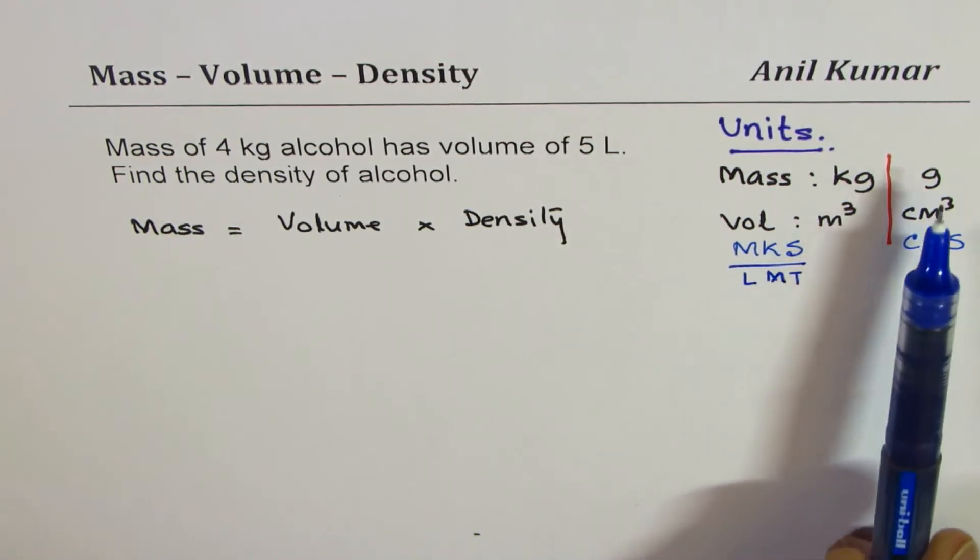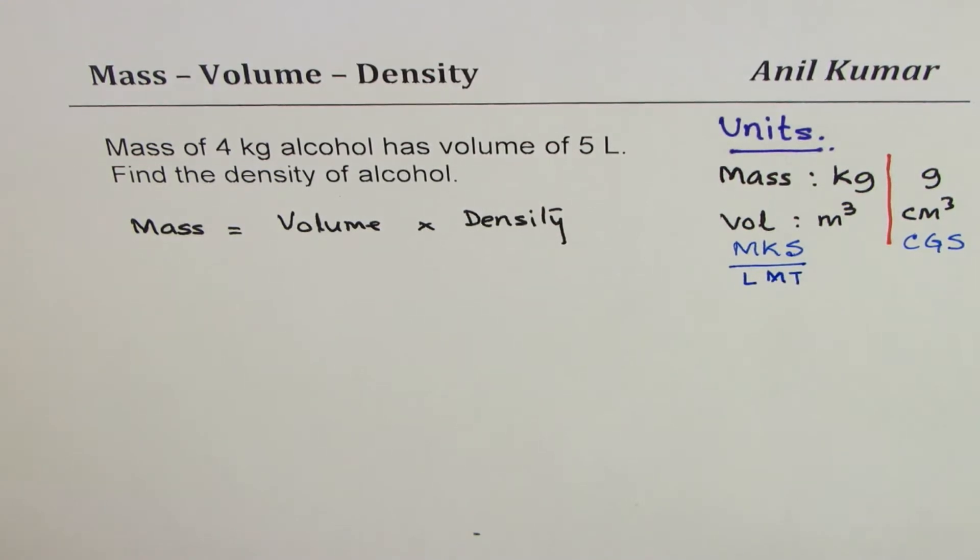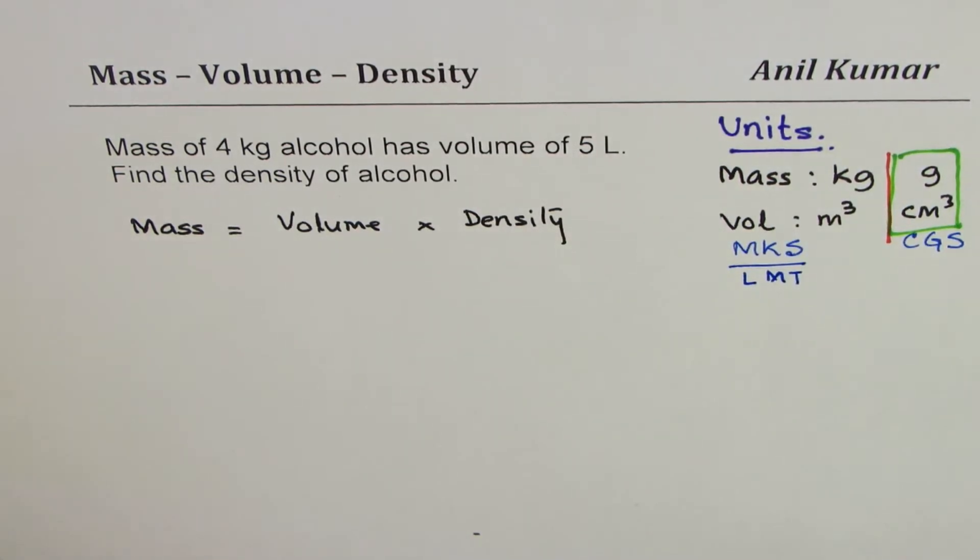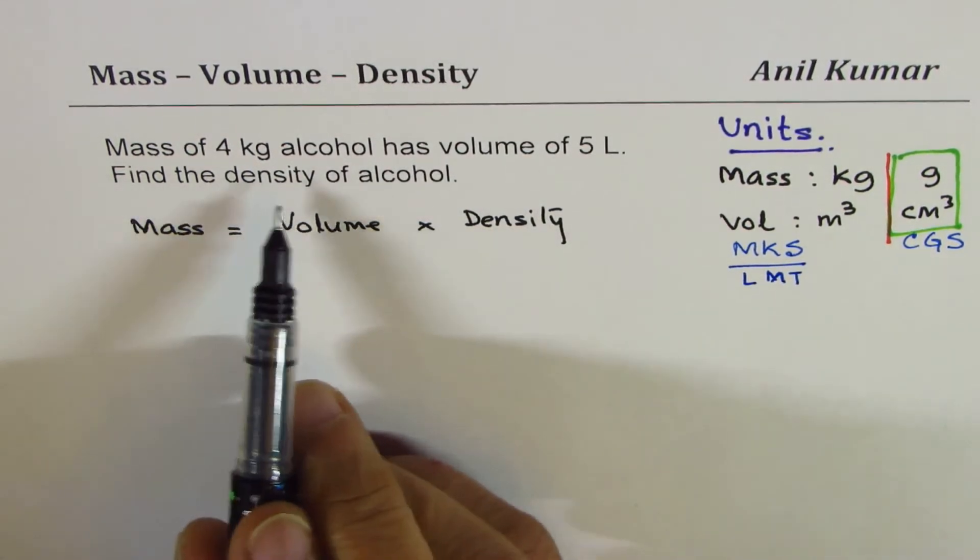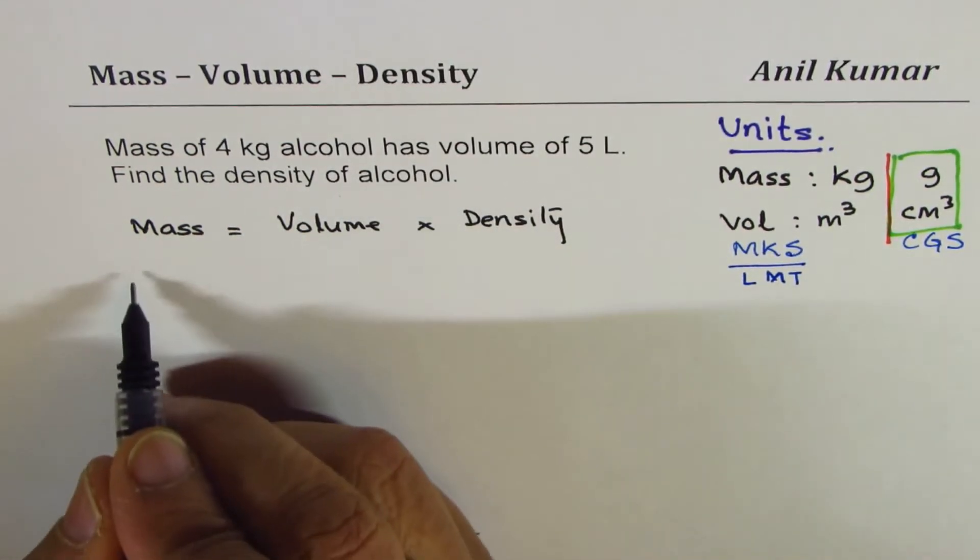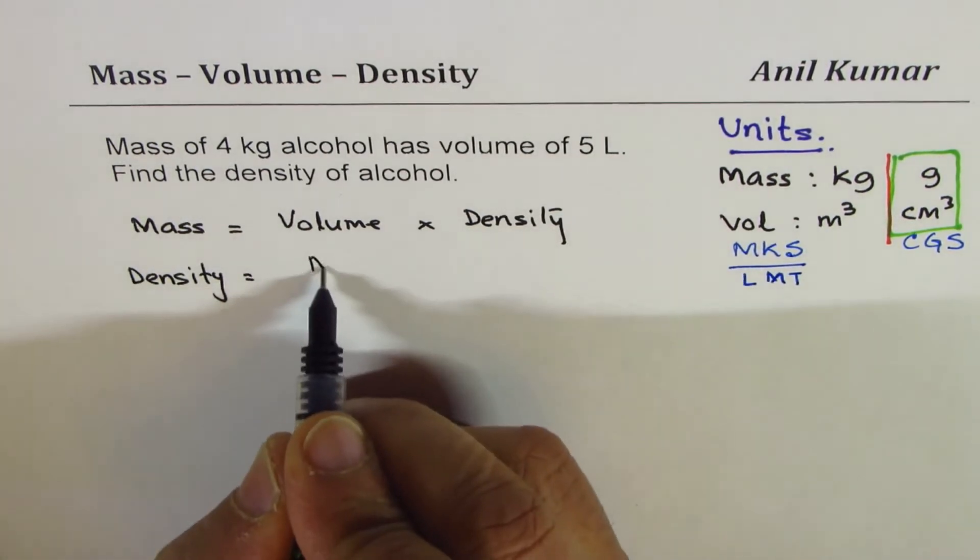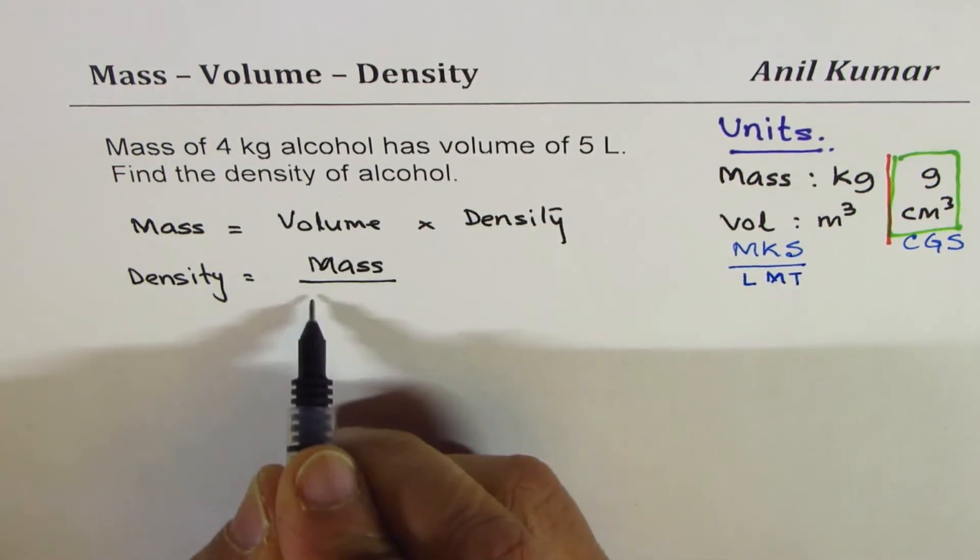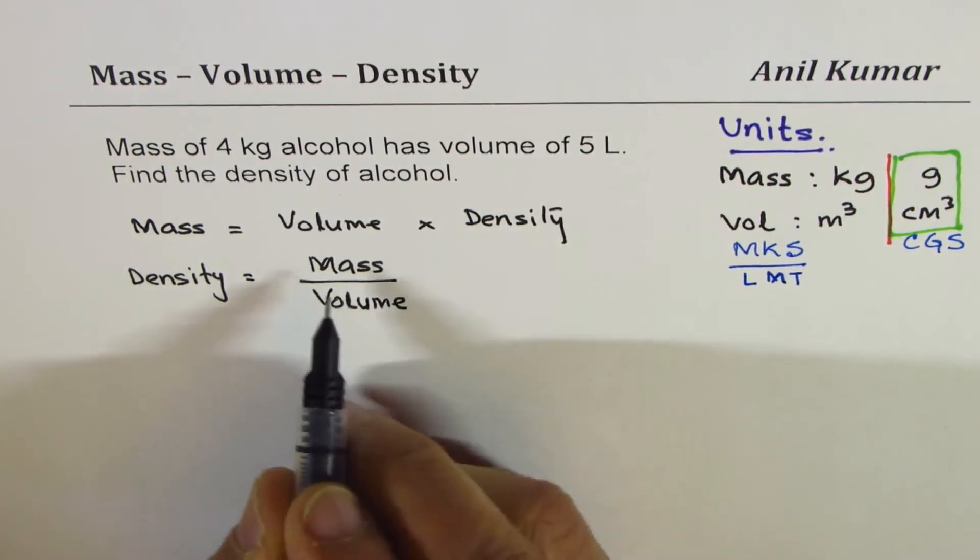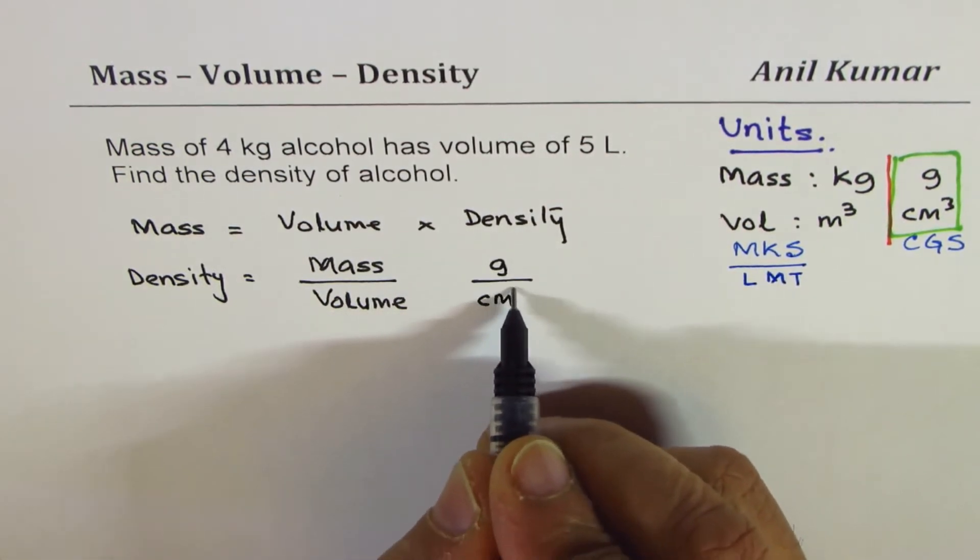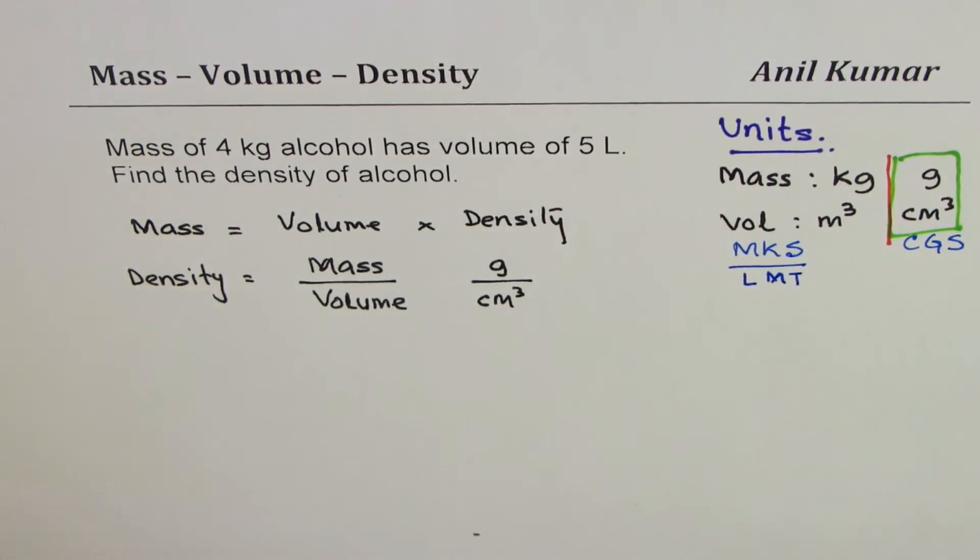Perfect. Now let us say that we want to do it in the units grams and centimeter cubes, we'll use this set of units. Now let's see how to convert. We need to find density. Let me rearrange this formula and write density equals to mass upon volume. And we are going to use units for mass as grams and for volume we'll use centimeter cube, so we'll follow this system.